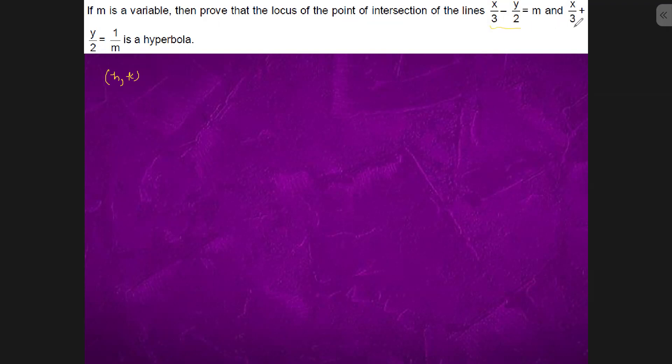This equation is h by 3 minus k by 2 equals m. Similarly, it will satisfy the second equation which is h by 3 plus k by 2 equals 1 by m.